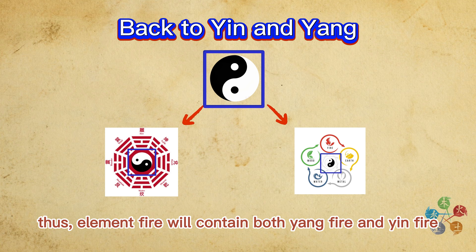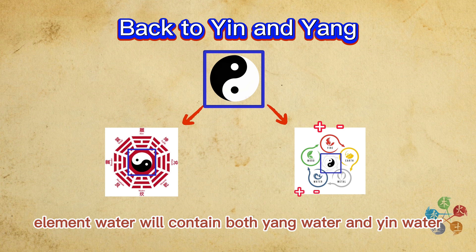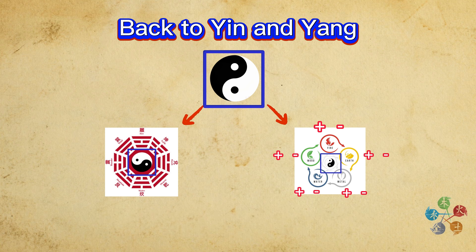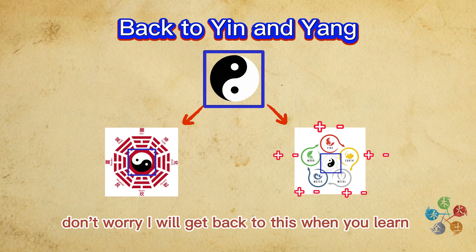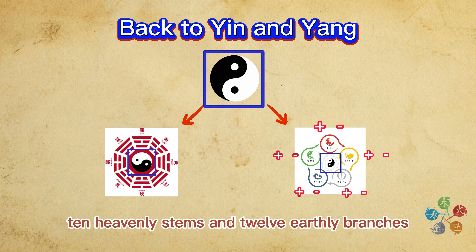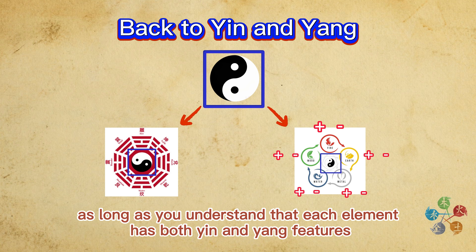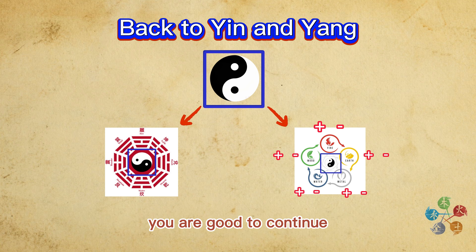Thus, element fire will contain both Yang fire and Yin fire, element water will contain Yang water and Yin water, and element metal will have Yang metal and Yin metal, etc. If you feel this is a bit confusing, don't worry — I will get back to this when you learn the 12 heavenly stems and earthly branches. For now, as long as you understand that each element has both Yin and Yang features, you are good to continue.